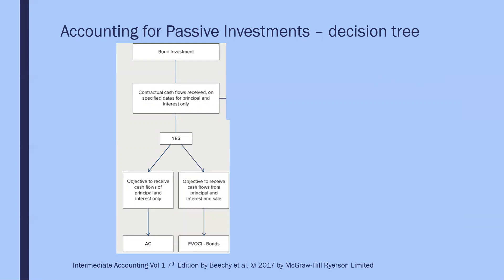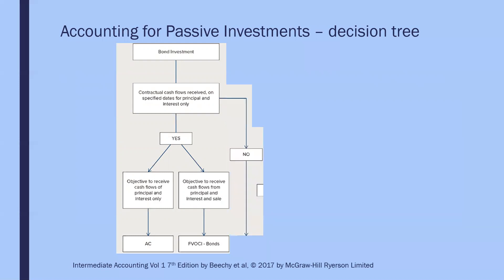If our answer is yes — our objective is to receive cash flows from principal and interest — but we may have to sell the bonds before maturity should the need arise, then it's more appropriate to use fair value through OCI. If the answer to the original question was no — we do not intend to receive contractual cash flows only — then the appropriate model is fair value through profit or loss.